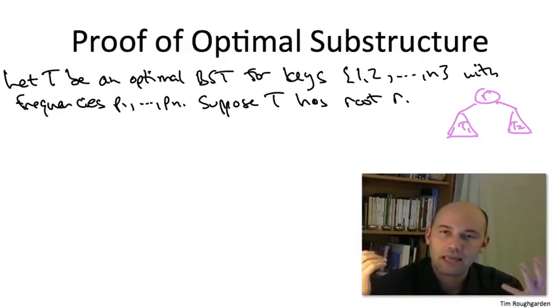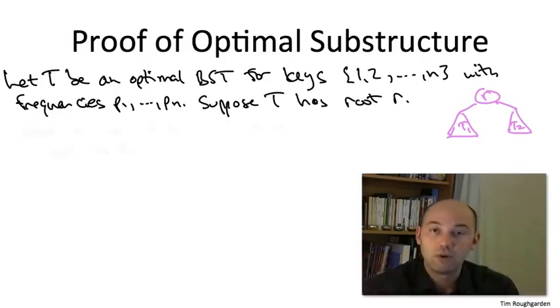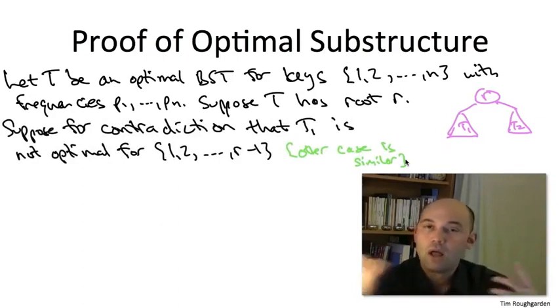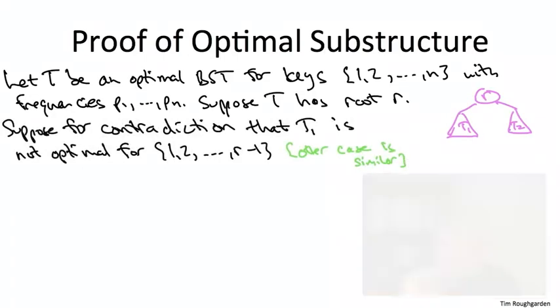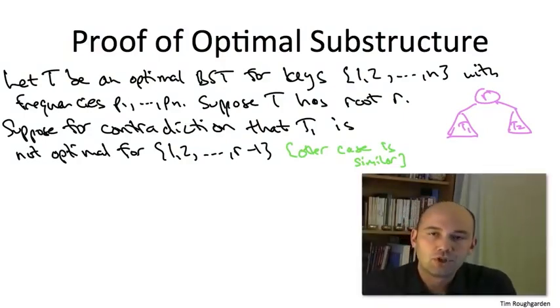The two cases are totally the same, whether in our contradiction we assume T1 is not optimal or whether T2 is not optimal. I'm just going to prove it in the case that T1 is not optimal. So if T1 is not optimal, there's got to be a search tree on its keys, 1 through r-1, which is better. Call that purportedly better solution T*1.